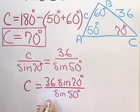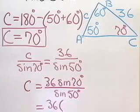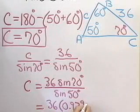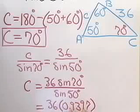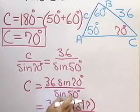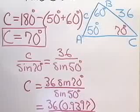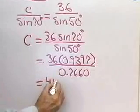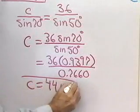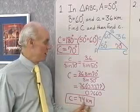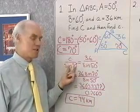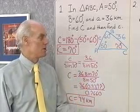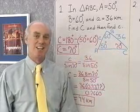If I do this on a calculator, it's going to be 36 times 0.9397 — that's the sine of 70 degrees — divided by sine 50, which is 0.7660. I do the arithmetic on my calculator, round off using significant digits, and I get 44 kilometers for the length of side C. So I used the law of sines by setting up these two ratios: C is to sine 70 as 36 is to sine 50. I end up with C equal to 44 kilometers, having found angle C and then the side opposite.